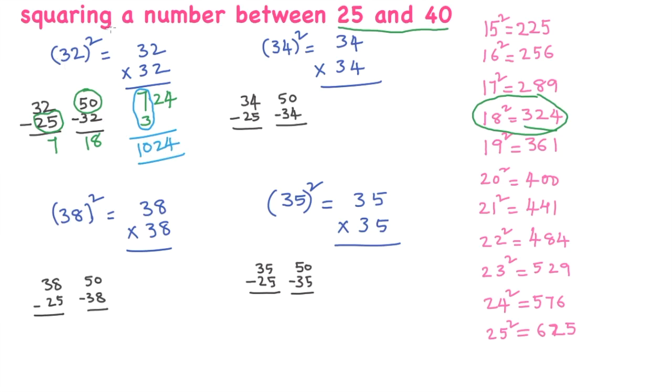Similarly, 34 square. You have to keep two things in your mind: one is 25, another one is 50. 34 minus 25 is 9, so you write 9 here. Now what is the difference between 50 and 34? 50 minus 34 is 16. 16 times 16 is 256.